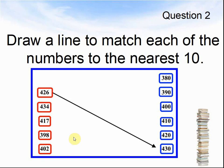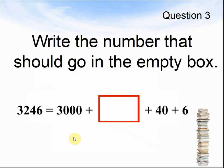Here comes the next question. Question 3. Write the number that should go in the empty box. 3,246 equals 3,000 plus something plus 40 plus 6. What goes in the missing box?